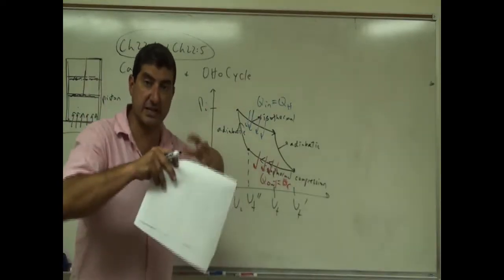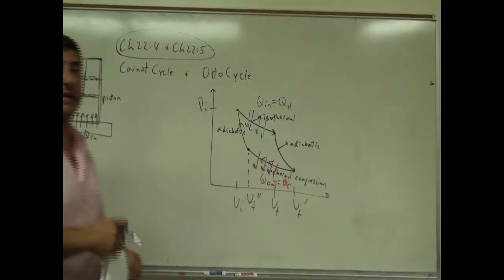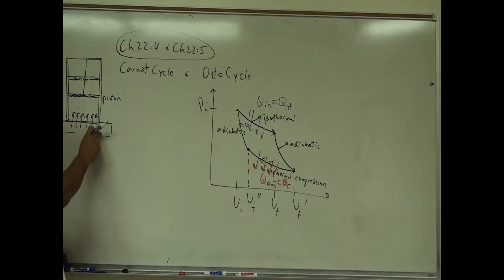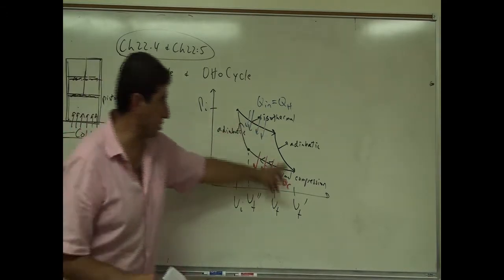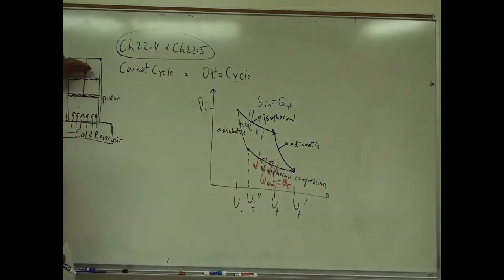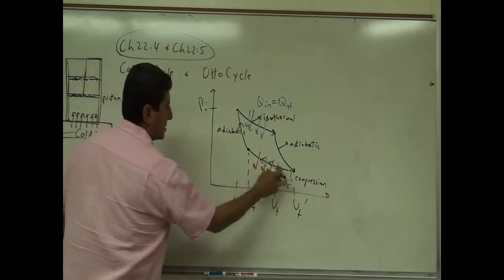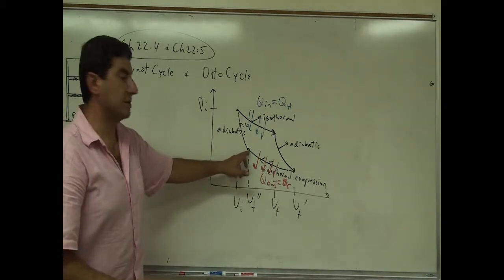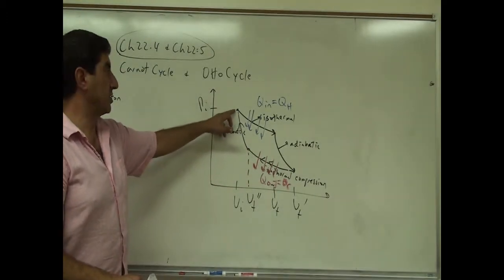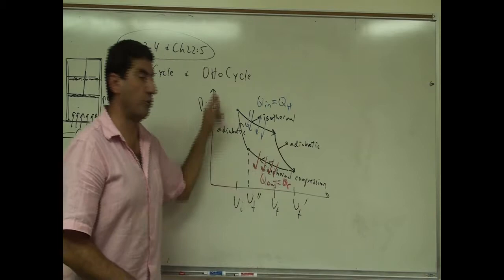The gas expands because the gas molecules are already moving fast, even though you've taken the heat source away. Then on the way back, you're extracting heat from the system — putting in something colder, the cold reservoir. The gas is really hot at this point, so you extract heat from it. When you extract heat, the piston goes back down. Then you take away the cold reservoir and the compression continues until it reaches the initial volume. Then the whole stage repeats.